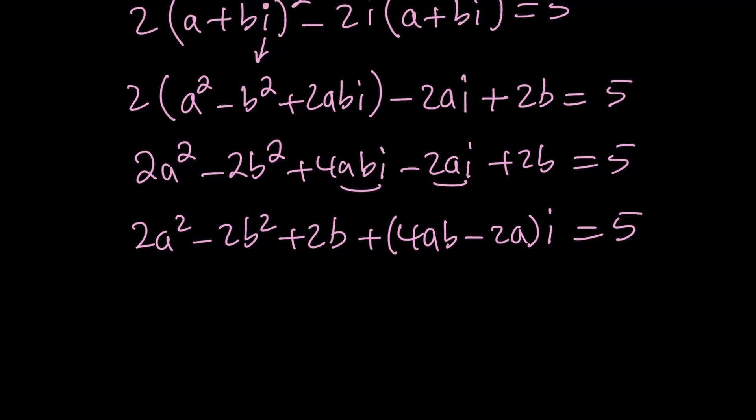Now, what happens if a complex number is equal to 5? Obviously 5 can be written as 5 plus 0i. So the imaginary part, since 5 is real, the imaginary part is 0. So that's the same thing that needs to happen on the left-hand side. So the imaginary part of this complex number is 0 and the real part is equal to the real number 5.